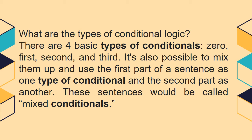The next question is: what are the types of conditional logic? There are four basic types of conditionals. The first one is zero, first, second, and third. It is also possible to mix them up and use the first part of the sentence as one type of conditional and the second part as another. These sentences would be called mixed conditionals.